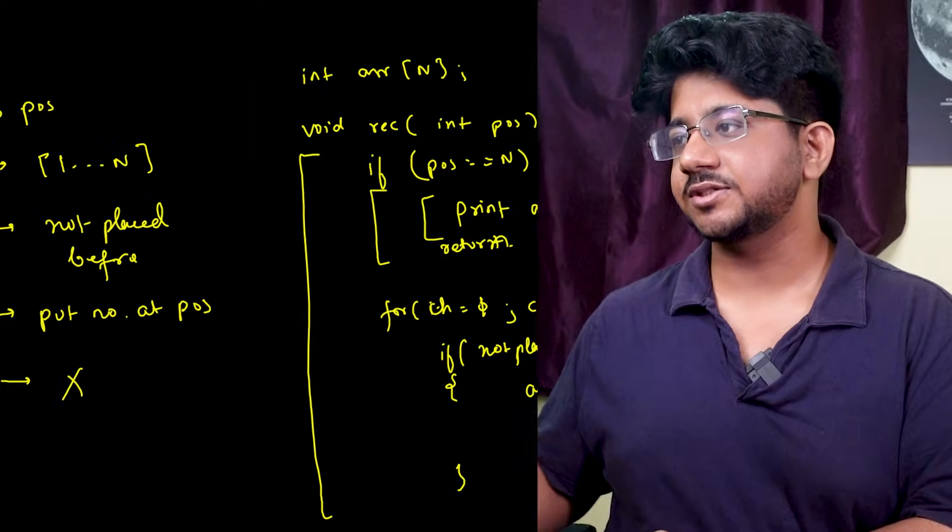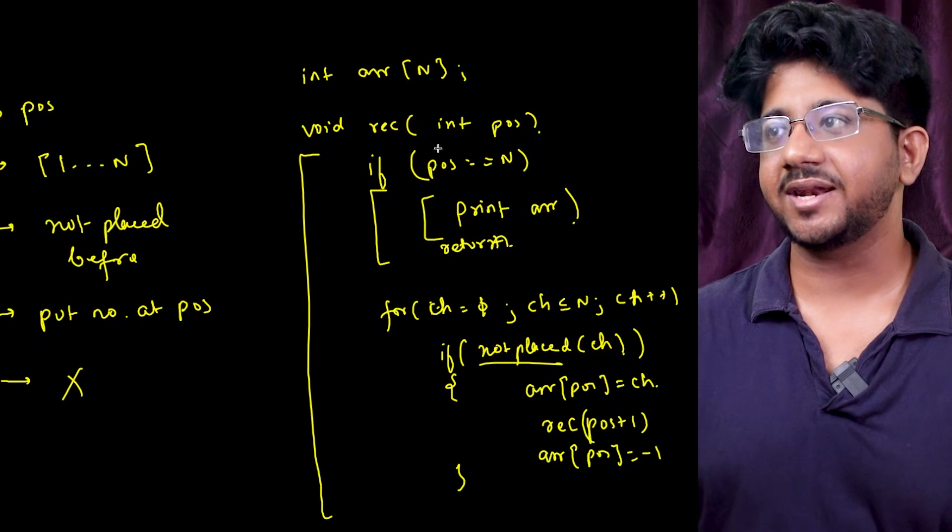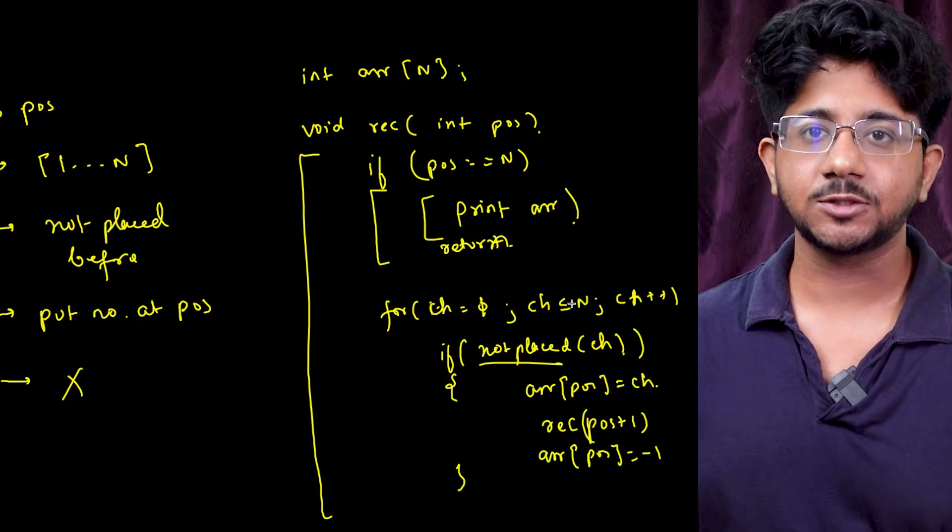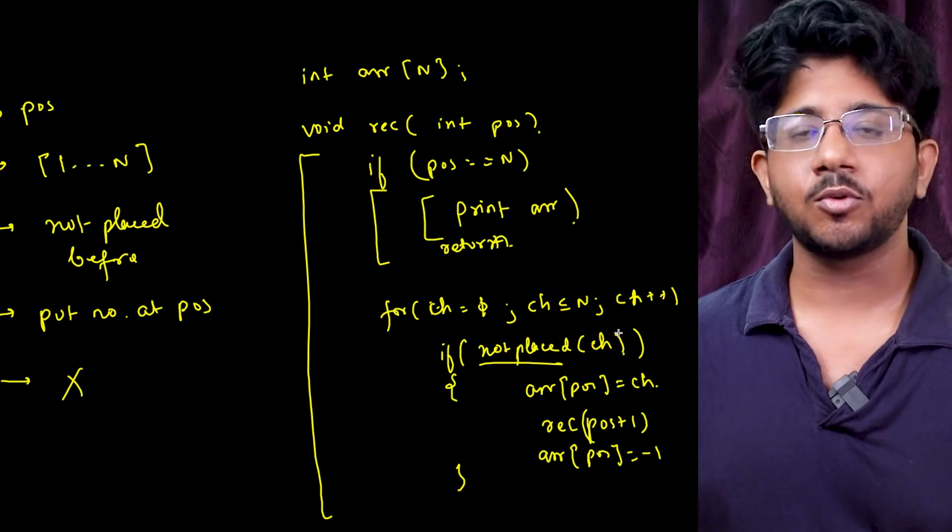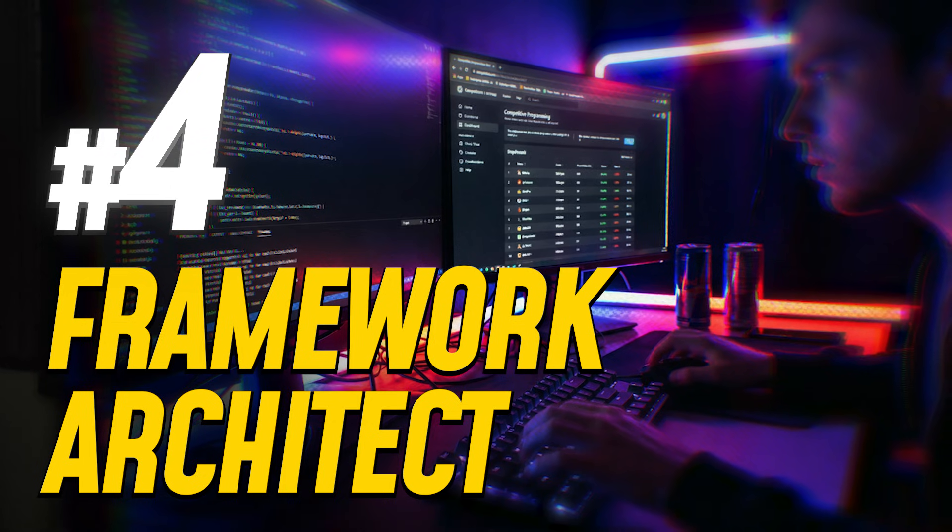Now there can be bunch of optimizations that this not placed can be maintained by another array. That which of the numbers from 1 to N has been used and you can like this check from O of N can be converted to O of 1. All these prunings and choice management can be learned as you solve good and hard problems. But again at least as the basic this is what level 3 looks like. Vivek if this is level 3 what does level 4 looks like? Let's understand that level 4.